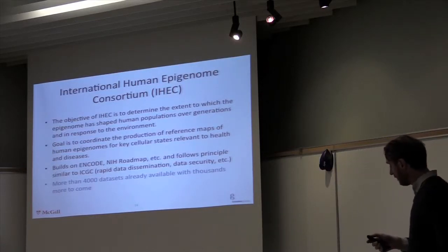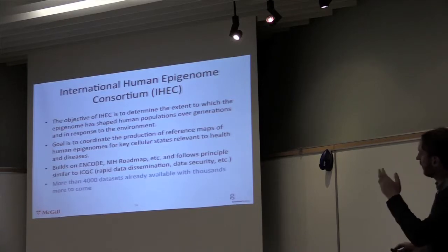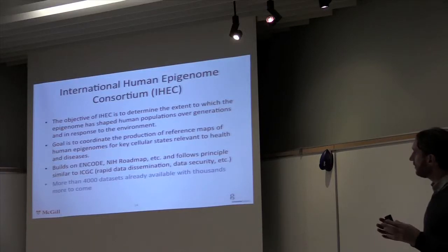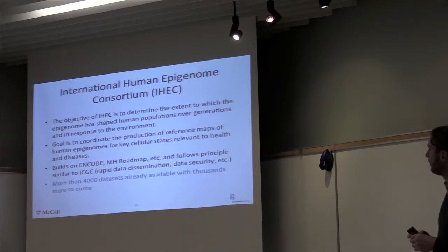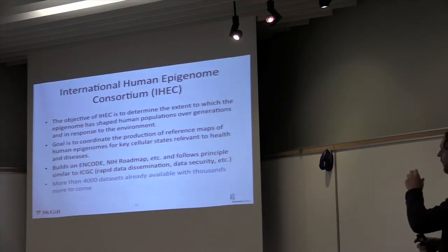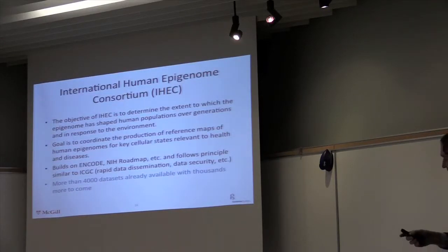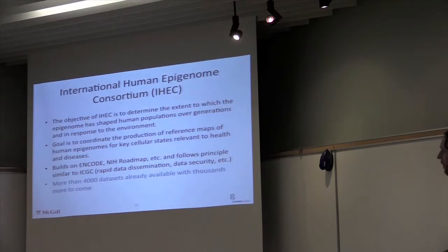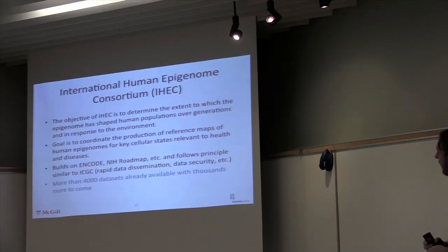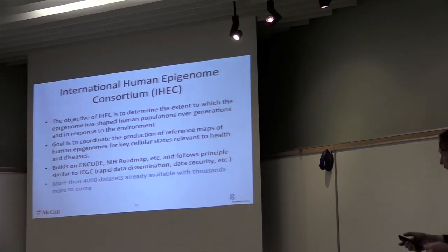These data sets are coming from ENCODE, but also from the International Human Epigenome Consortium — an international consortium that builds on top of what ENCODE and the NIH roadmap in the U.S. have already done. It's now more international with many countries participating, including Canada, and we're one of two Canadian sites contributing — along with the genome center in BC. The goal is to really characterize the dynamic state of the genome. This is what we call the epigenome: this additional layer on top of the genome, the dynamic state of the genome in different conditions, whether it's different cell types, in response to the environment, or in healthy versus disease states.